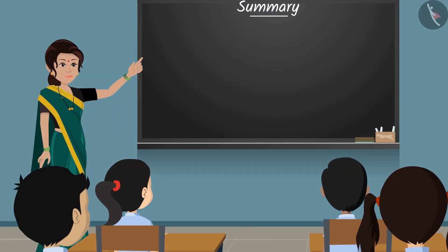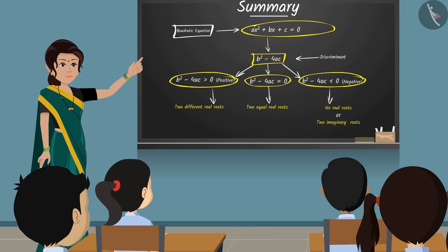In this video, we have seen some interesting examples based on the discriminant of the quadratic equation and nature of roots. In the next video, we will see the common mistakes that arise while solving these types of questions.